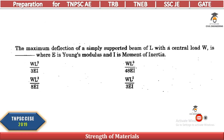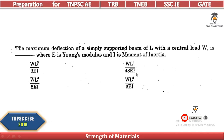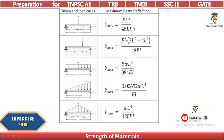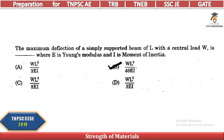The maximum deflection of a simply supported beam of span L with a central point load W — using the deflection formula for a simply supported beam with central load — is WL³ / 48EI. This formula must be memorized along with other deflection, bending moment, and shear force formulas.